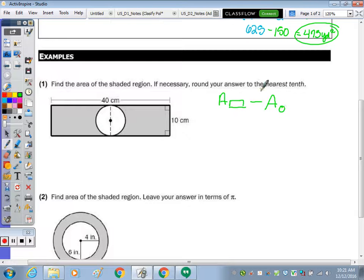If necessary, round your answer to the nearest tenth. Because the area of a circle involves pi, that's why they're going to tell us to round. So the area of a rectangle, length times width. So that's going to be 40 times 10, which is 400,